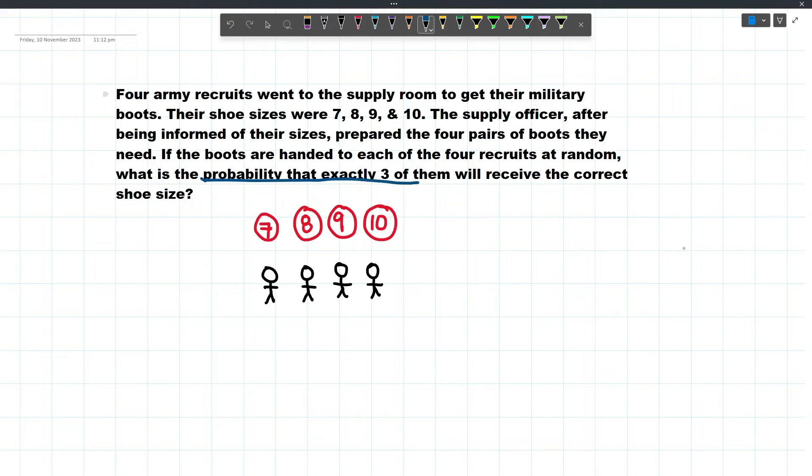The probability that exactly 3 of them will receive the correct shoe size will essentially be 0. Now why?